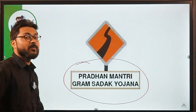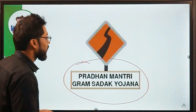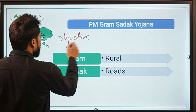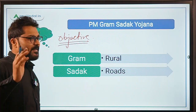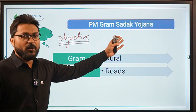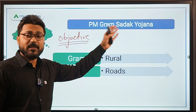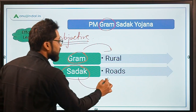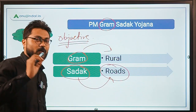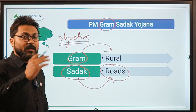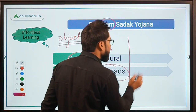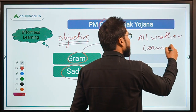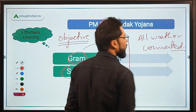The scheme we are going to discuss is Pradhan Mantri Gram Sadak Yojana. Let us first simplify the objective. The name says it all — 'gram' means rural and 'sadak' means road. The basic objective is that the government wants to provide all-weather connectivity to unconnected habitations in rural areas.